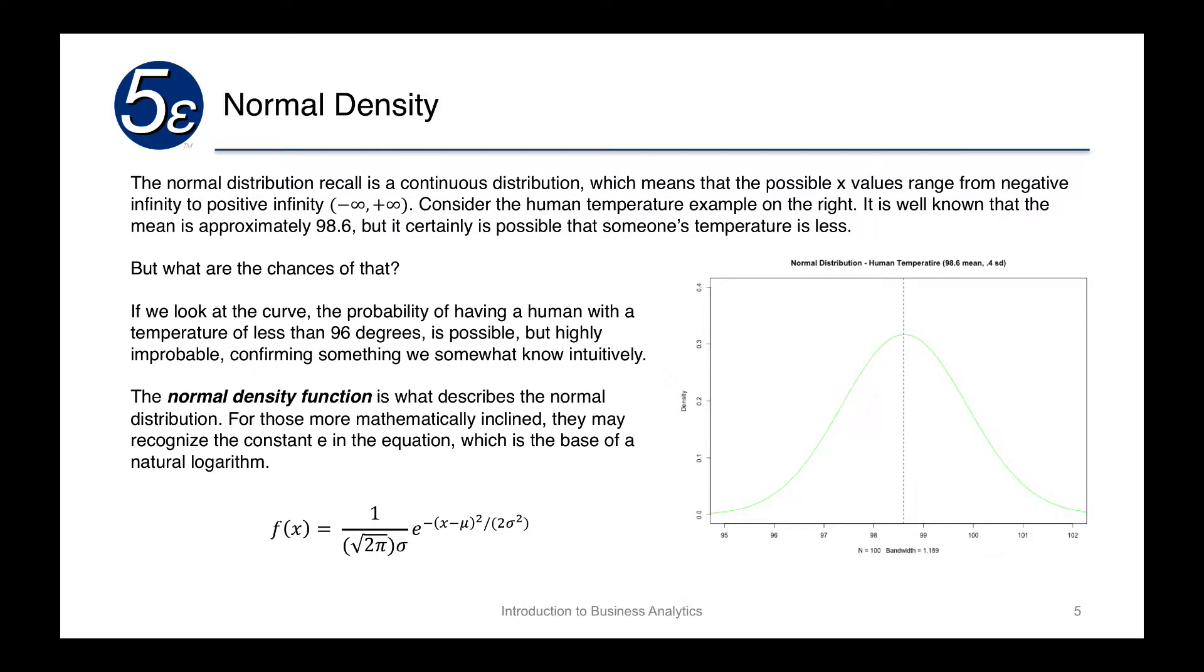In the normal density function, it's a continuous distribution, which means that the possible x values range from negative infinity to positive infinity. Consider the human temperature example on the right. It's well known that the mean is approximately 98.6. But it is certainly possible that someone's temperature is significantly less. But what are the chances of that? They get very, very remote. If we look at the curve, the probability of having a human with a temperature of less than 96 degrees is possible, but highly improbable, confirming something we somewhat already know.